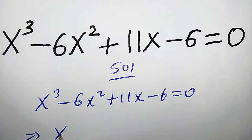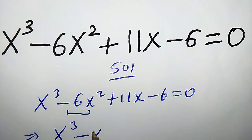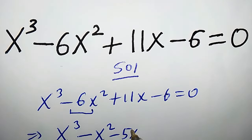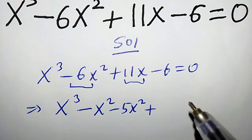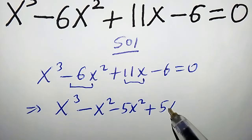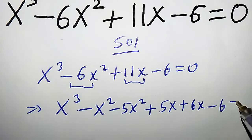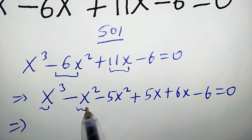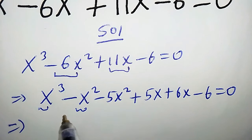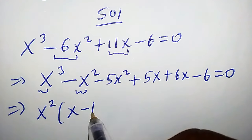This implies that x³ — we can write -6x² as -x² - 5x² — and 11x could be written as 5x + 6x, minus 6 equals to zero. Now, between the first two terms, the common factor is x², so we get x²(x - 1).